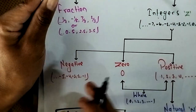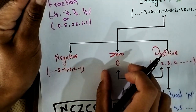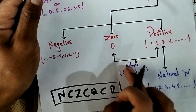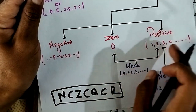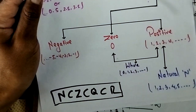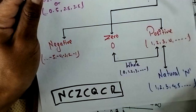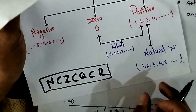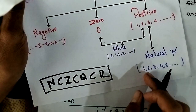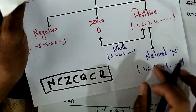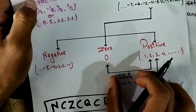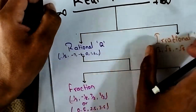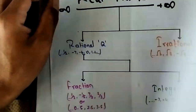The integer part includes a negative part and a positive part, with zero in between. The negative part goes to negative infinity, and the positive part goes to positive infinity: one, two, three, four and so on. Integers and fractions together form the rational numbers, and rational numbers combined with irrational numbers give us the real numbers.